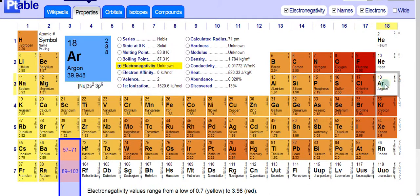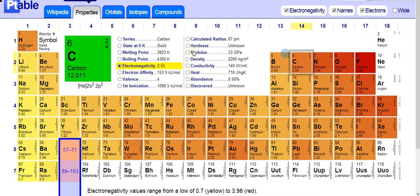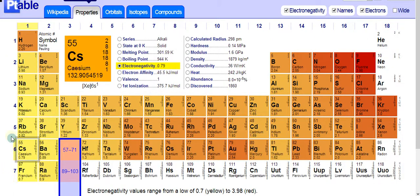Electronegativity, as I said, is a scale from 0 to 4. Fluorine is the most electronegative, and that also decreases as you go from right to left and top to bottom.